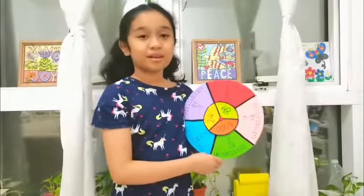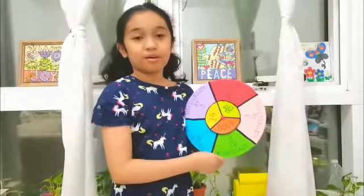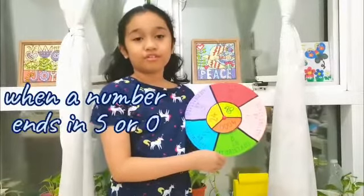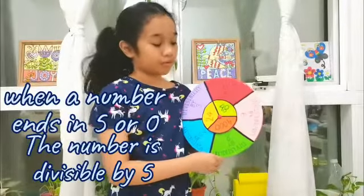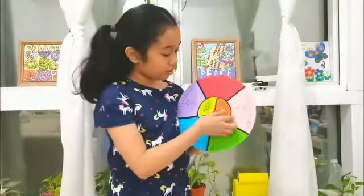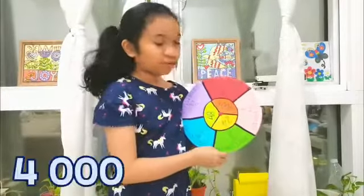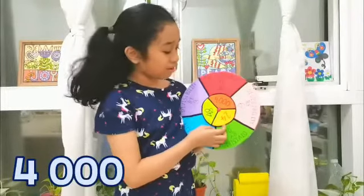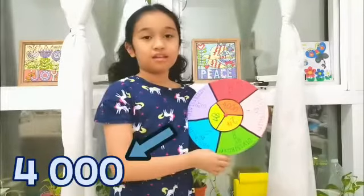Divisibility by 5: When a number ends in 5 or 0, then the number is divisible by 5. For example, 4000 is divisible by 5 because it ends in 0.